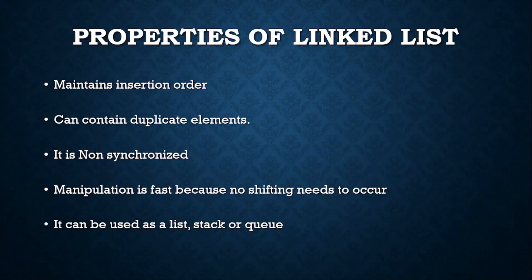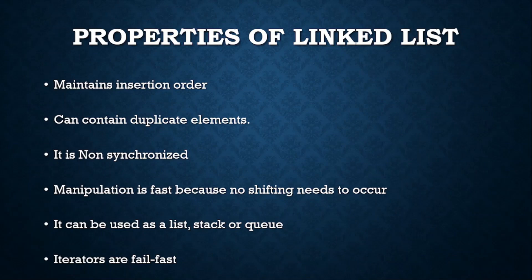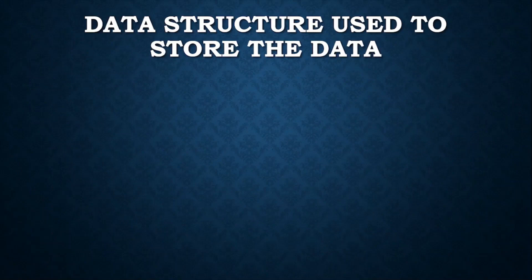The iterators returned by LinkedList are fail-fast. That means if an iterator is obtained from the list and there is some structural modification made to the list after that, those iterators will throw a ConcurrentModificationException.